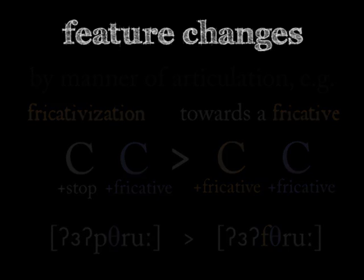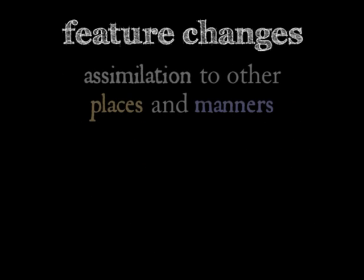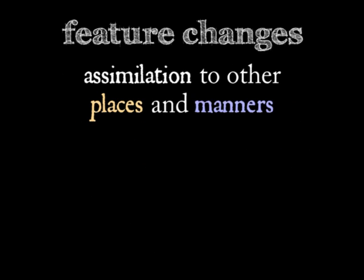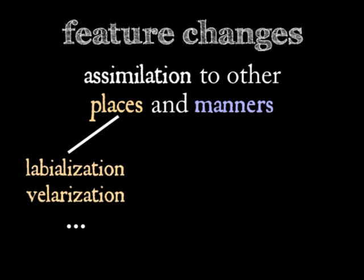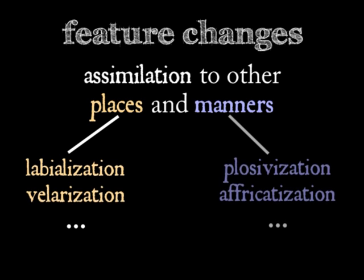Of course, a phoneme can assimilate to any place or manner of articulation. Further examples include labialization, when the assimilating sound becomes more labial, and velarization, when it becomes more velar. When it comes to manners of articulation, the assimilating sound can become a plosive, an affricate, and so on.